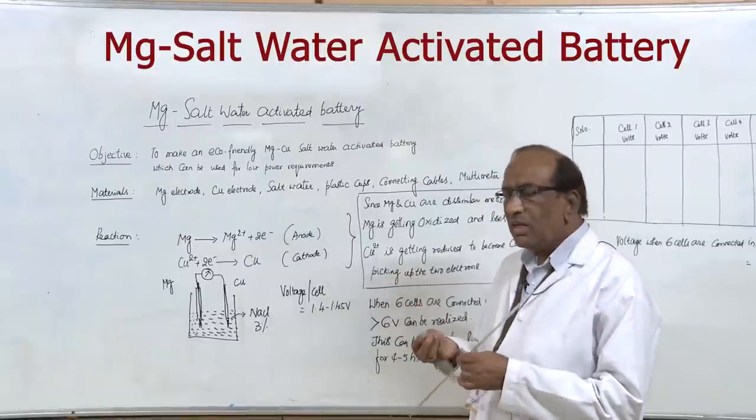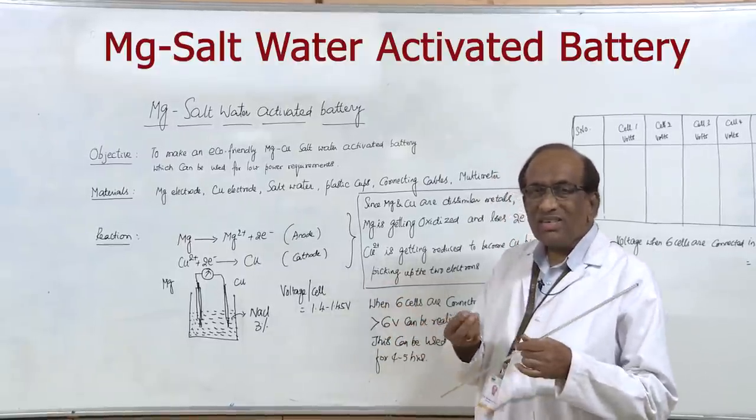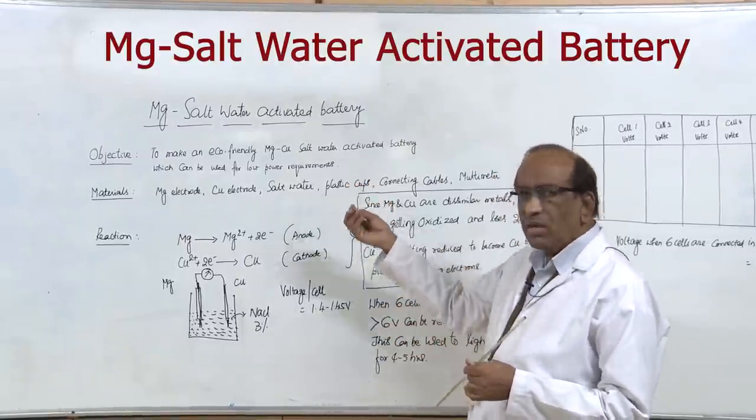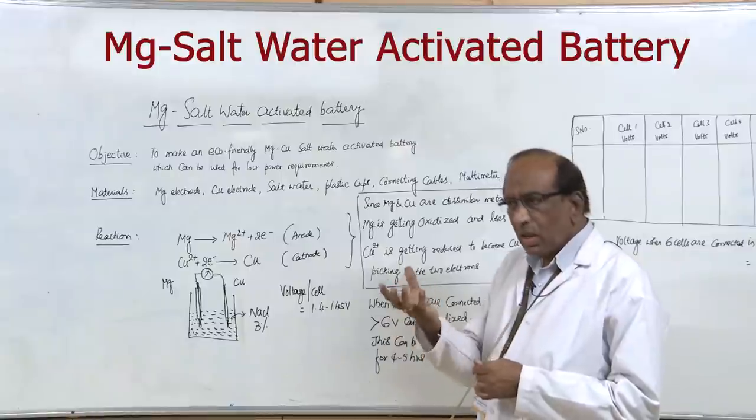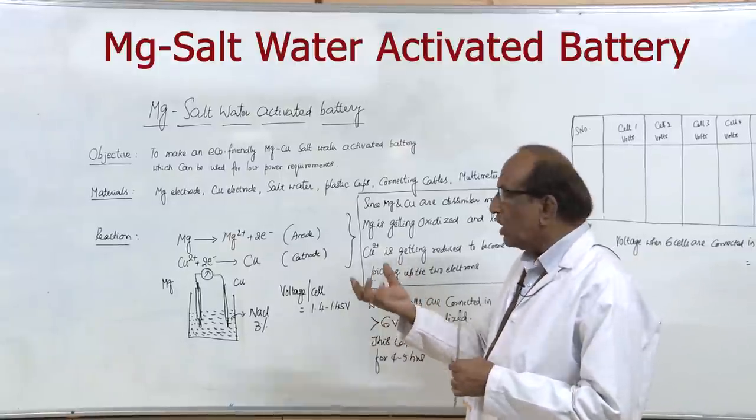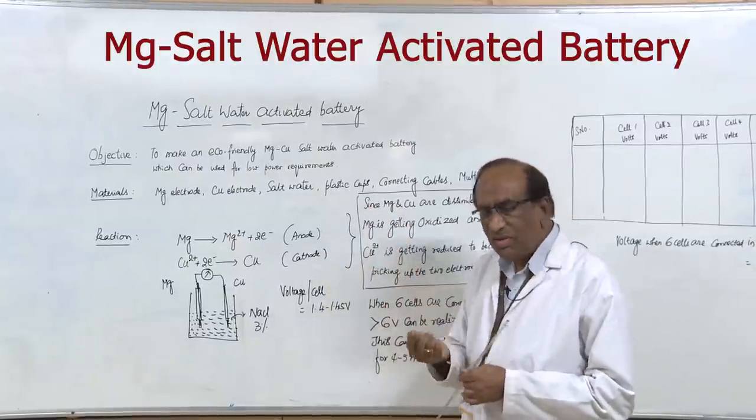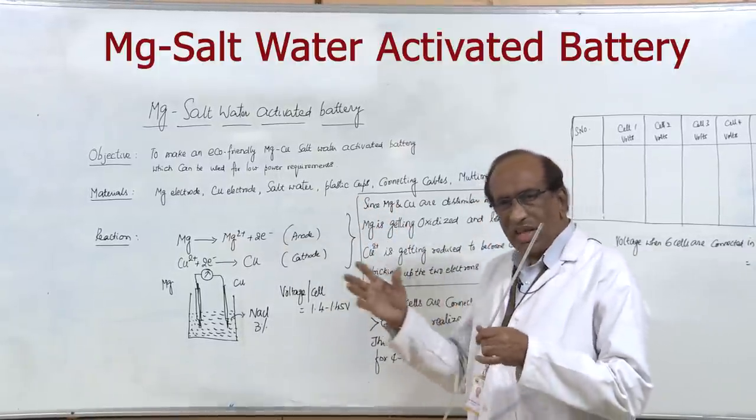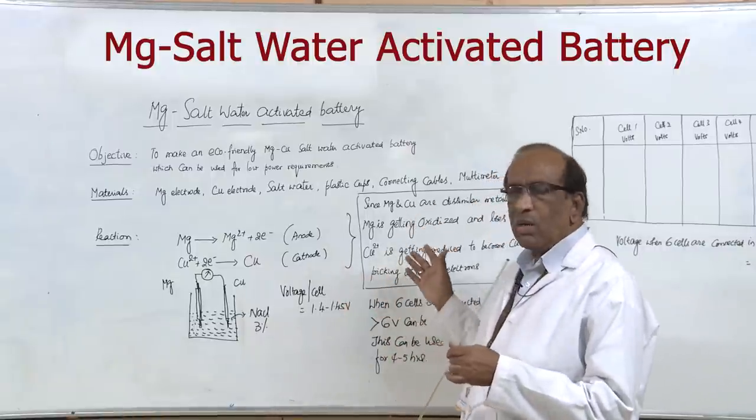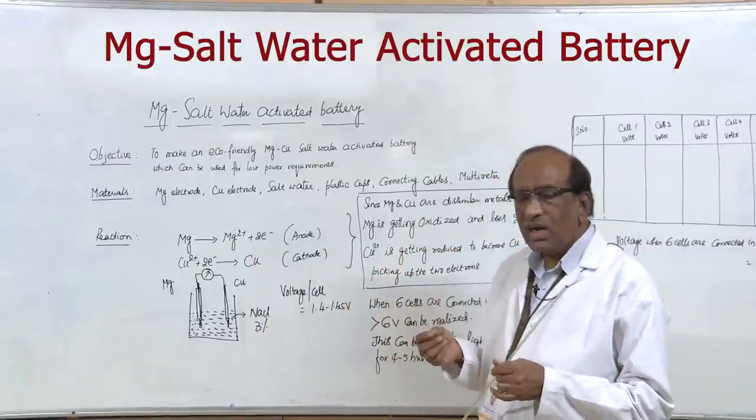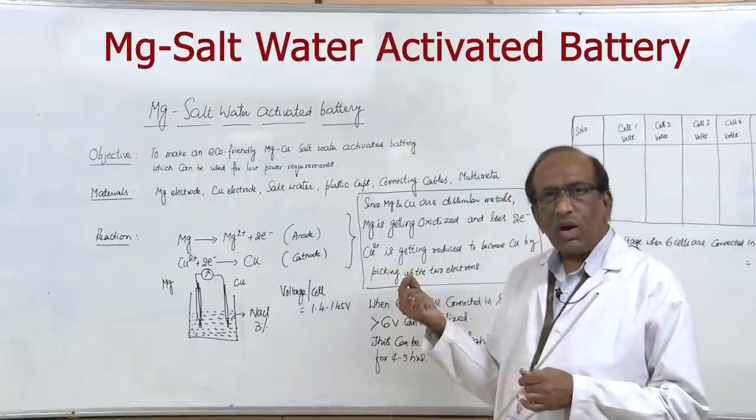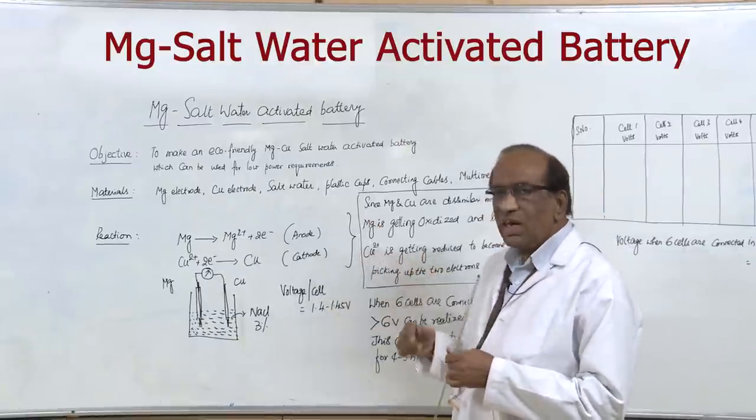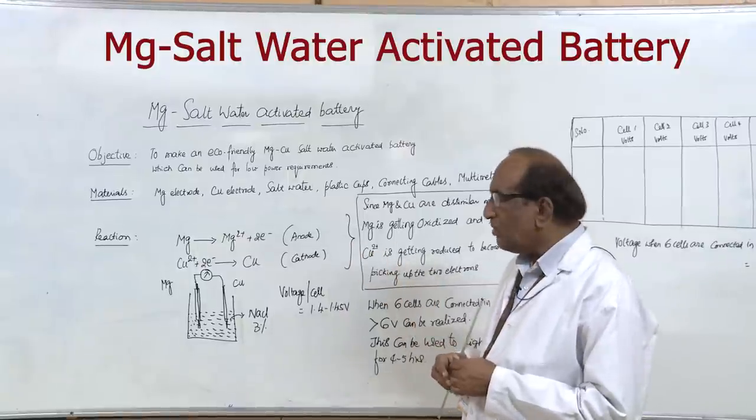If you carry some magnesium foil or steel, in place of magnesium we can also use steel nails, some containers, some salt water and some copper pieces, you will be able to connect the cell and if you connect more number of cells in series you can run a small LED bulb of 6 volts or 9 volts for about 3 to 4 hours time. That is the idea of introducing this experiment for you.